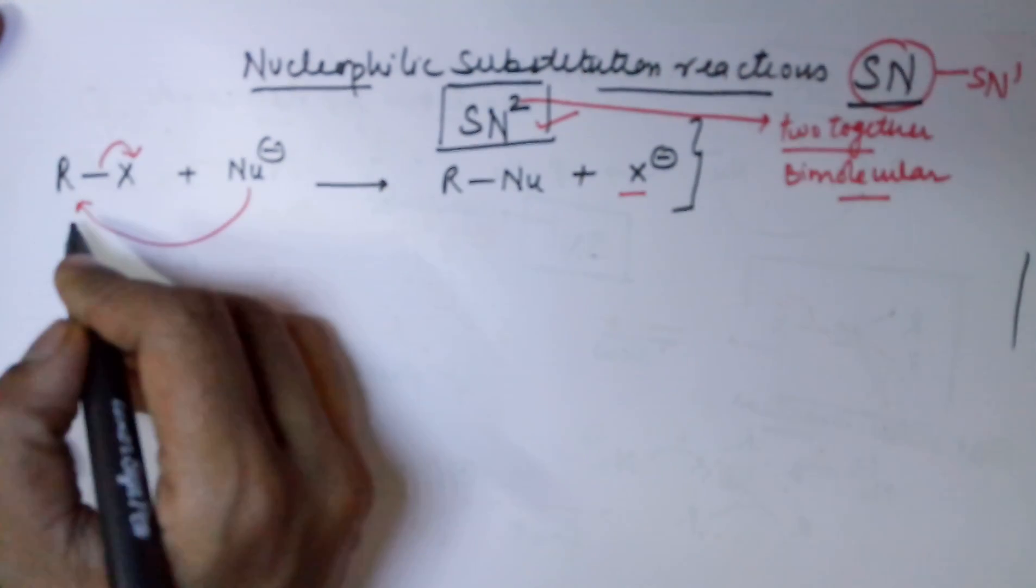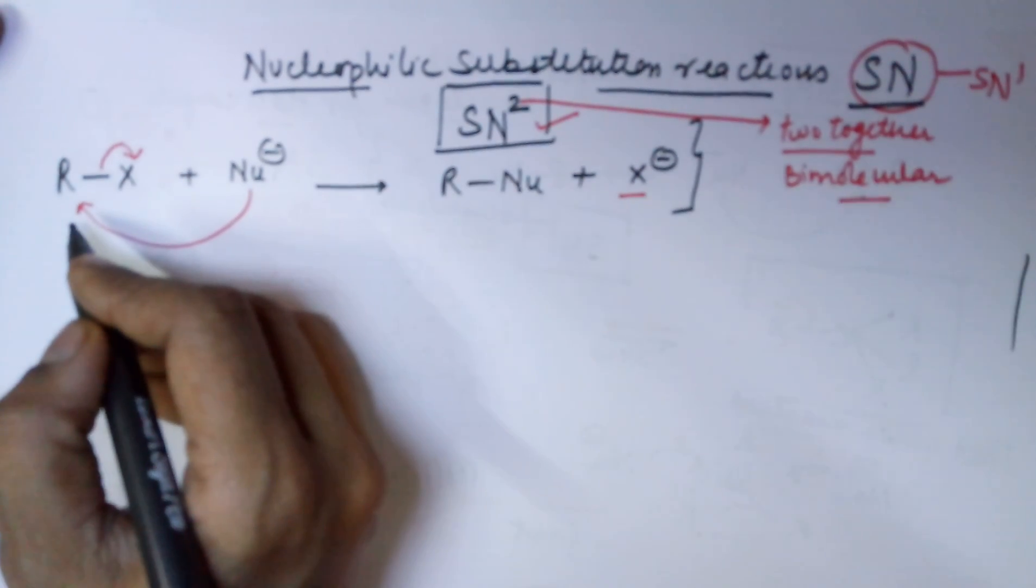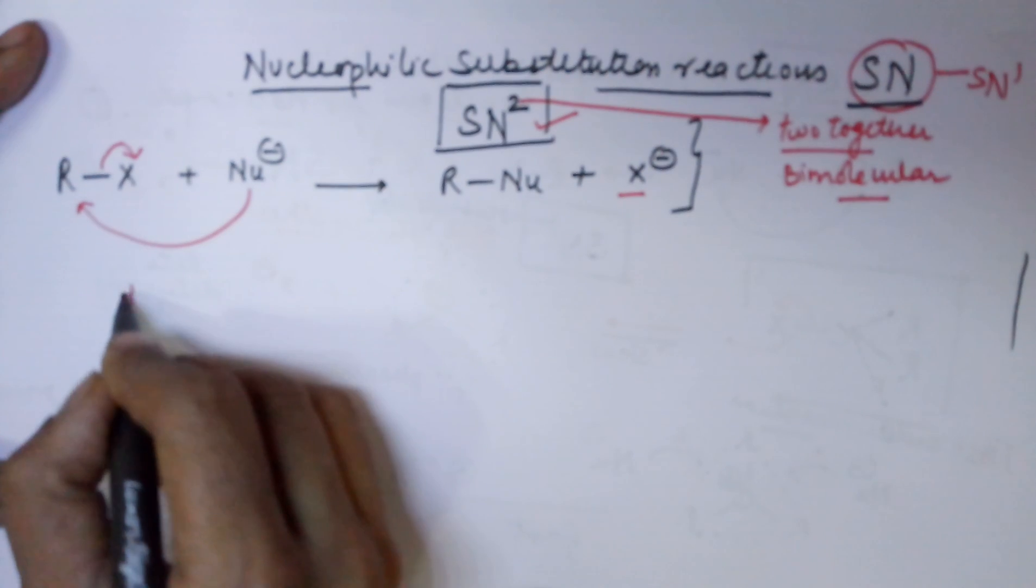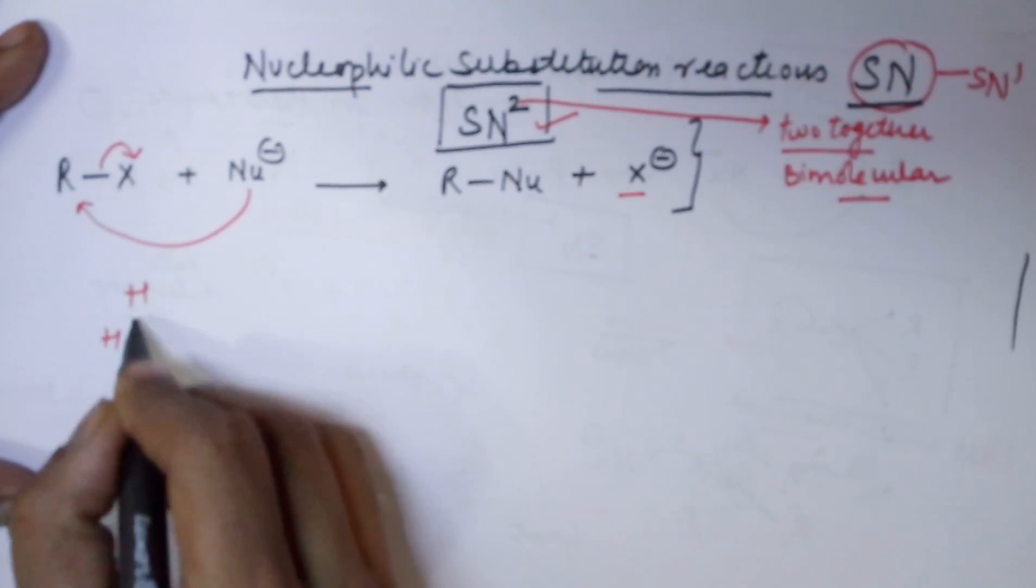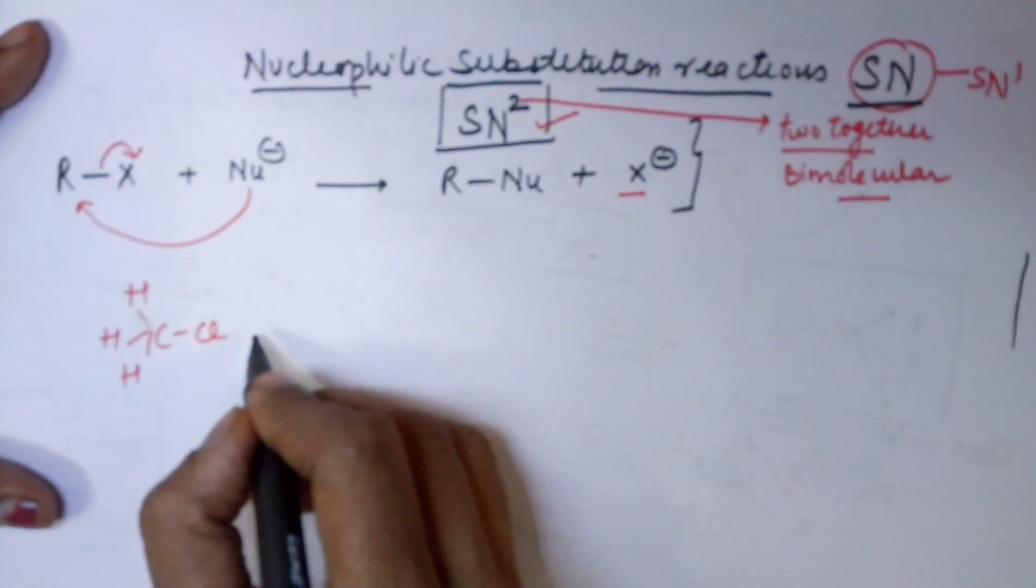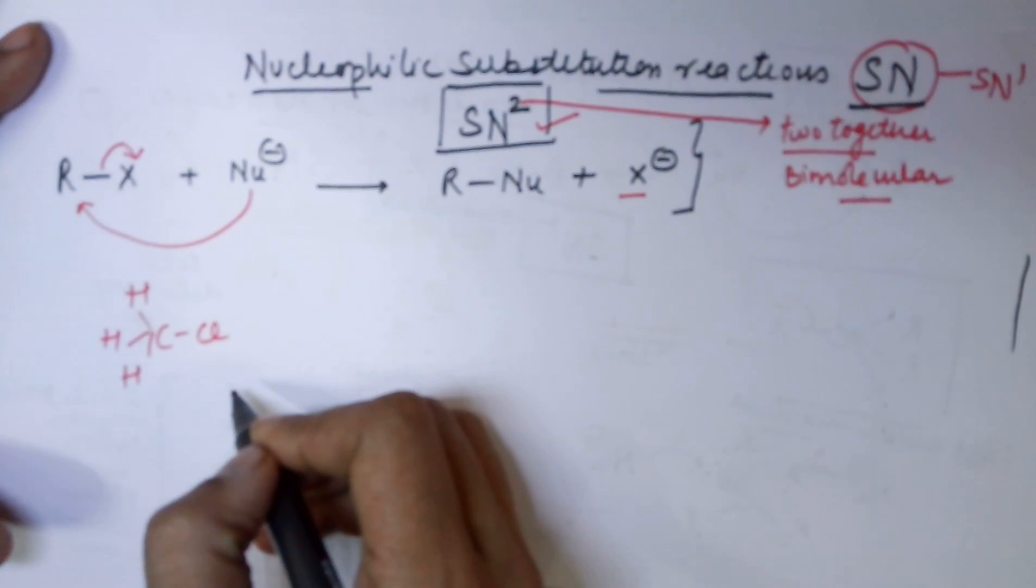I will be taking an alkyl halide. I am taking a primary alkyl halide in this case. Let the alkyl halide be of the type methyl halide. It could be chloride, it could be bromide, anything. And you have to attack a nucleophile onto it.